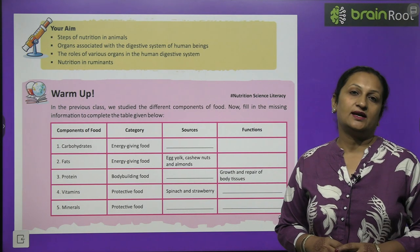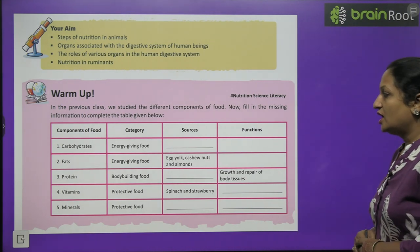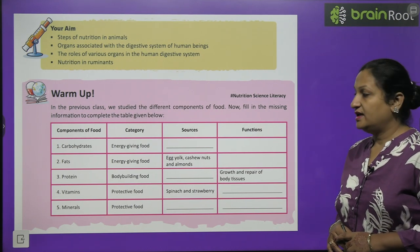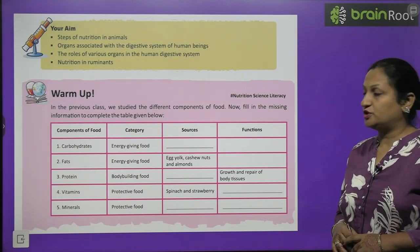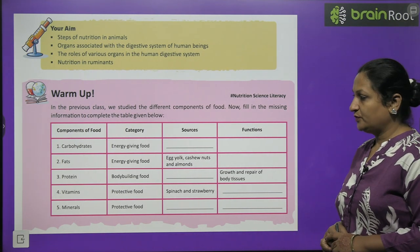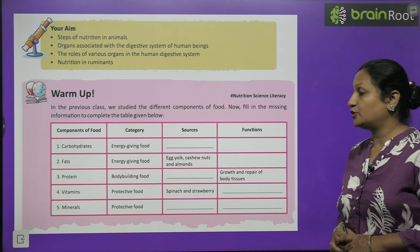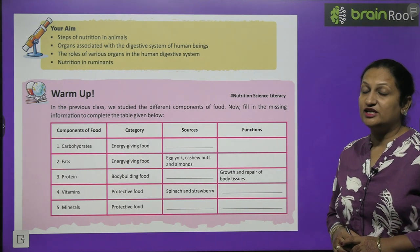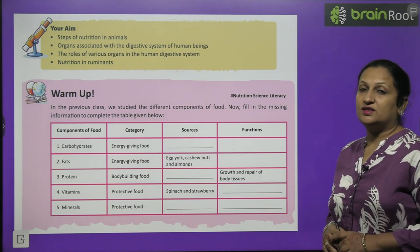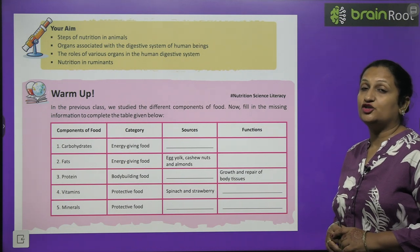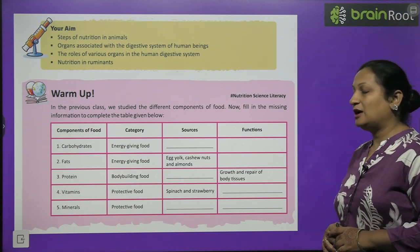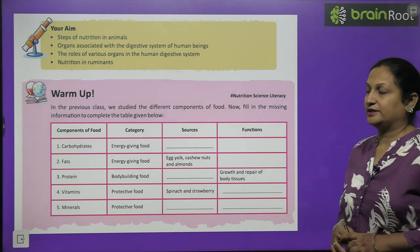Fats act as a cushion against the organs. Proteins are body-building food — sources include milk, eggs, cheese and meat — and they are necessary for the growth and repair of body tissues. Vitamins are a protective food obtained from spinach and strawberries, providing immunity to the body. Minerals also fall in the protective food category, obtained from green leafy vegetables and fruits, and also help strengthen the body's immunity.